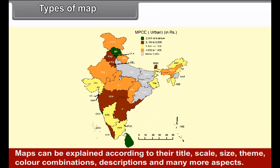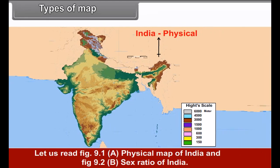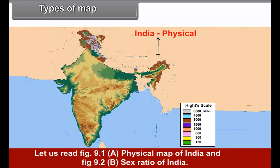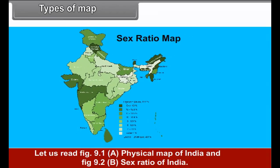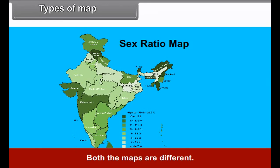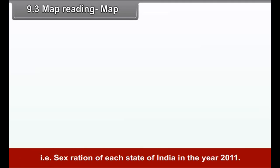Maps can be explained according to their title, scale, size, theme, color combinations, descriptions and many more aspects. Let us read figure 9.1a, physical map of India and figure 9.2b, sex ratio of India. Both the maps are different. So let us try to read them separately. For this, we have to take different aspects of maps as given below.